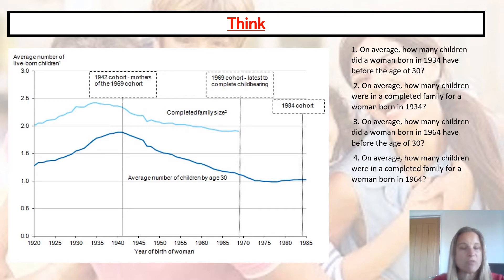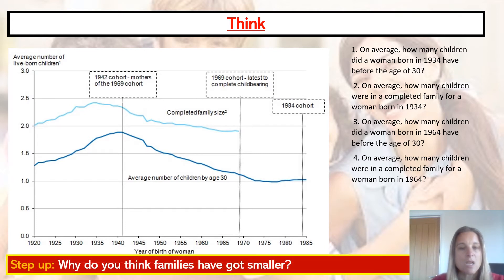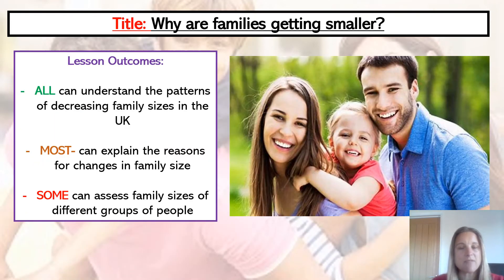The other piece of information the graph tells us is that women born in 1969 who were having their children — their mothers were the 1942 women — just to give you a little bit of information about how everybody was related to each other. So, why do you think families have got smaller? Clearly, families have got smaller over the years — you can see a really clear downward trajectory. The title for today's lesson is: why are families getting smaller?